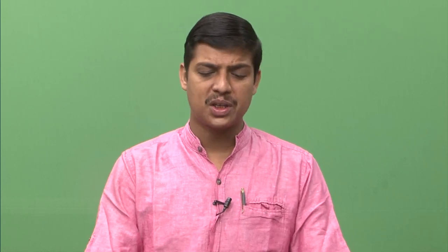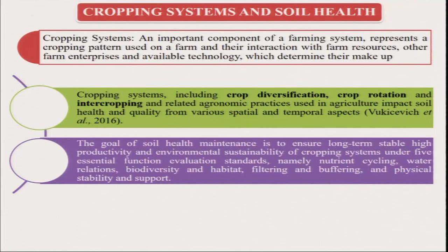So, what happens is — the cereal may need 100 kg nitrogen, but it gets 25 to 30 kg nitrogen from associated legumes, reducing the total nitrogen demand we have to supply from outside organic sources. This also promotes organic farming. The goal of soil health maintenance is to achieve long-term stable high productivity. Sustainable agriculture means producing quality and good quantity of food without degrading the soil, environment, or ecosystem — and this is only possible through organic farming.